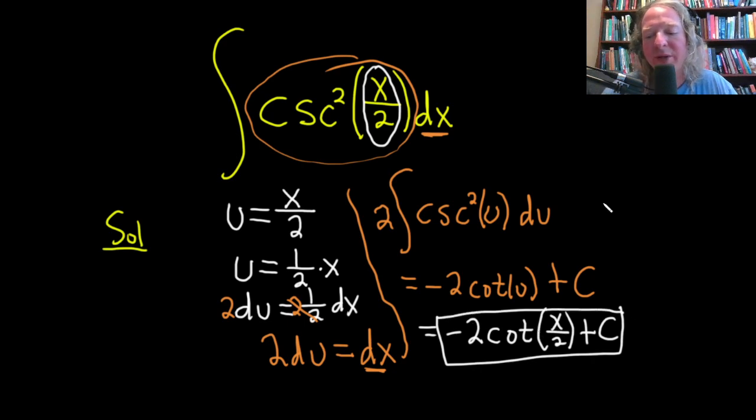Remember, it's always really important to go back to the original variable of integration when you're doing these substitution problems. The original variable in this case was x. In some instances, you might make more than one substitution. In that case, you still want to make your way back to the original one which the problem was stated in.